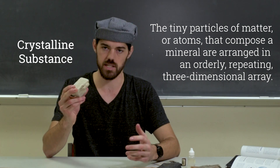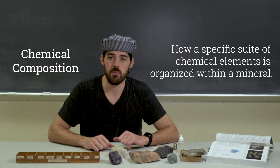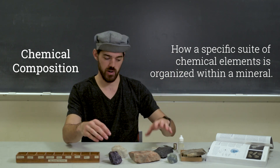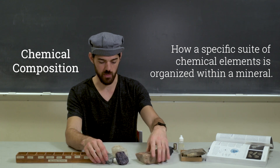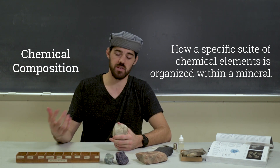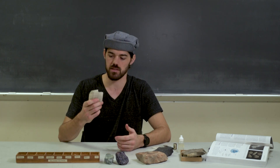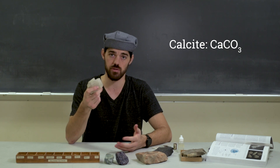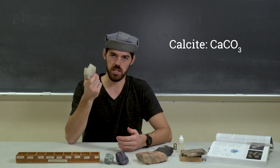Calcite always has the same 3D atomic structure. Finally, a specific chemical composition — that simply means each one of these minerals, whether it's fluorite, magnetite, feldspar, calcite, always has a specific mixture of ions that make it up. For example, calcite — calcium carbonate, CaCO3 — is one calcium and one carbonate ion, and that's always going to be the case.